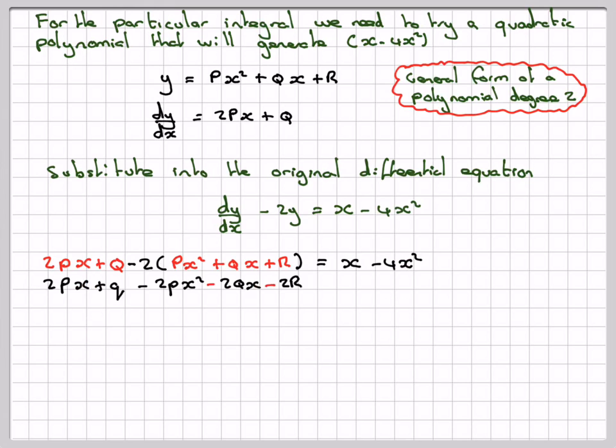Simplifying that, we get 2px plus q. The coefficient of x squared is going to be minus 2px squared. The coefficient of x will be 2p minus 2q lots of x, and the constant term will be q minus 2r.